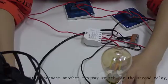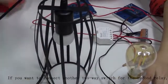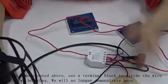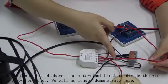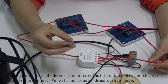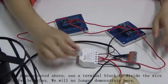If you want to connect another two-way switch for the second relay, as we demonstrated while using a terminal block to divide one into two branches, we will no longer demonstrate here.